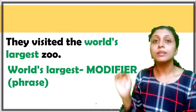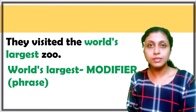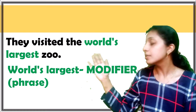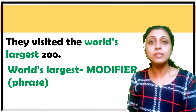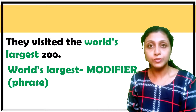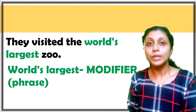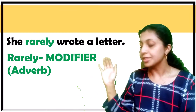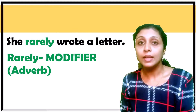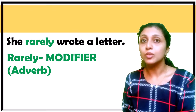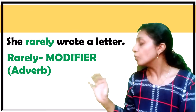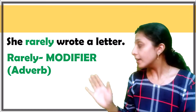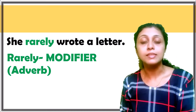They visited the world's largest zoo. Here the noun is 'zoo,' and the words that modify it are 'world's largest.' Since we have two words modifying the noun, we can call it a phrase. She rarely wrote a letter — here 'rarely' is the adverb and 'wrote' is the verb, so 'rarely' is the modifier.